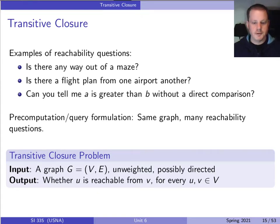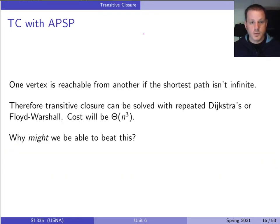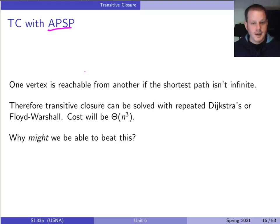First, about transitive closure from Monday's class. The problem is about reachability: given a graph, we want to know for every pair of vertices whether you can reach one vertex from another. We can solve this with all-pairs shortest path (APSP), which runs in O(n³) time. This is one way to solve transitive closure — find the shortest path everywhere, and if it's not infinite, that vertex is reachable.